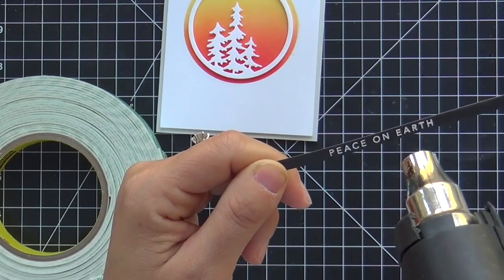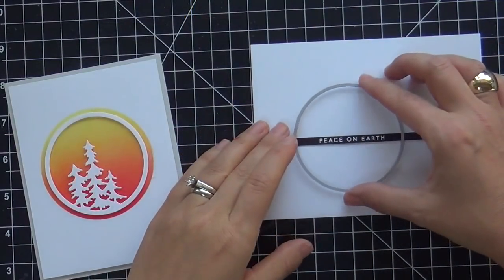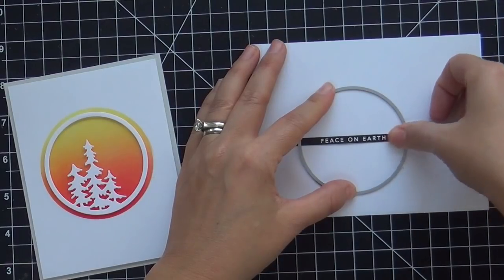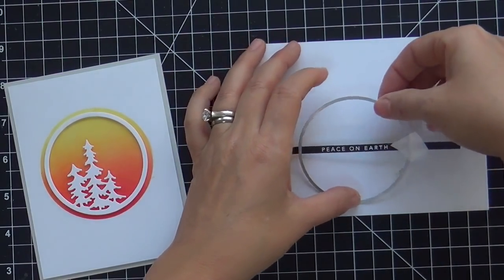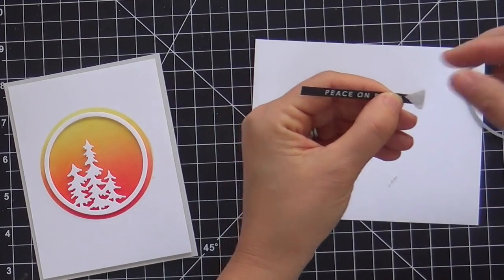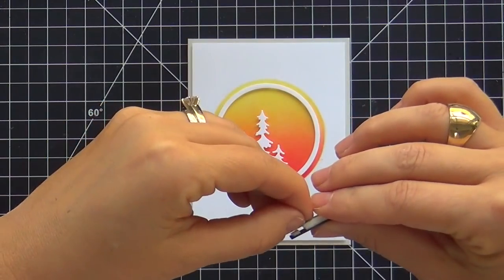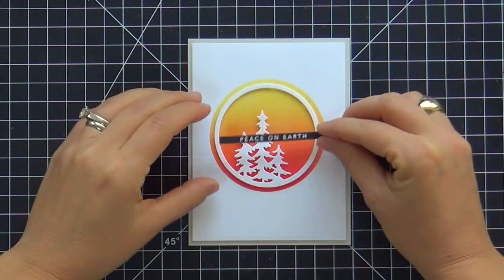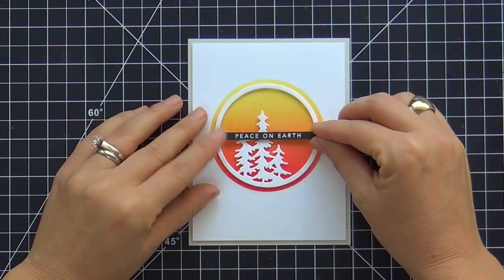So now I'm embossing a sentiment from the coolest Yule-ist stamp set. I'm taking that same circle die that I used to die cut my evergreen circle frame and I'm going to die cut the sentiment strip which will make it the exact size with the perfectly slightly rounded edges so that I can pop this up right in the center. And I'm loving this.